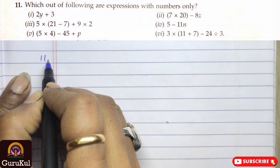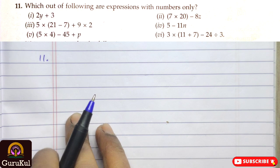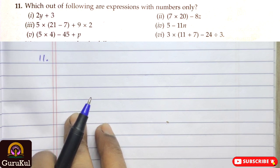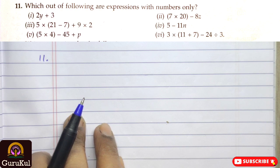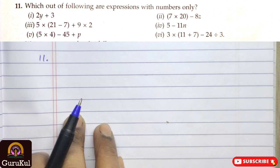Question number 11, as you can see on the screen, it says, which out of the following are expressions with numbers only? That means, we have to look carefully for the expression which do not have alphabets. So, the first part is, 2y plus 3, so, it has alphabets in it. Second part, 7 into 20 minus 8z, again, it has alphabet z there. Sub part 3, 5 into bracket, 21 minus 7 close bracket, plus 9 into 2. Here, we can see, there is no alphabet present here.